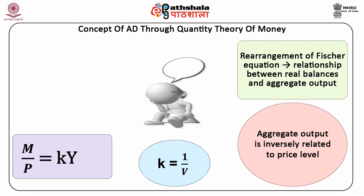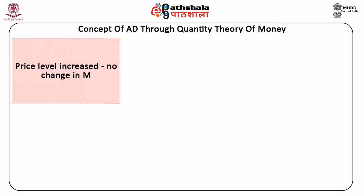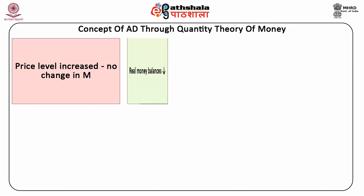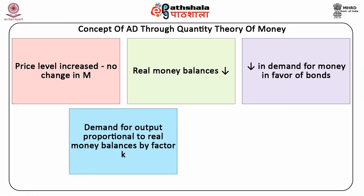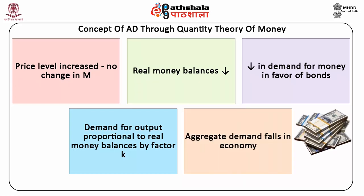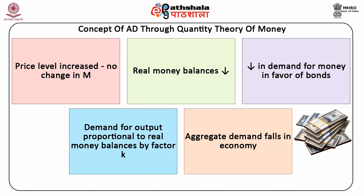Thus, aggregate output is shown to be inversely related to the price level for a given level of money stock. When the price level increases with no change in M, real money balances M/P fall. This leads to a fall in demand for money in favour of bonds. Since demand for output is proportional to real money balances by a factor of K, aggregate demand also falls in the economy.